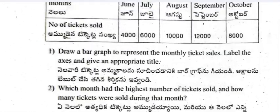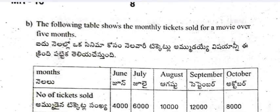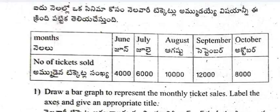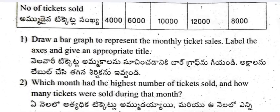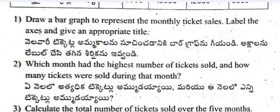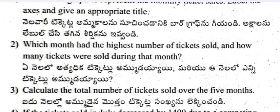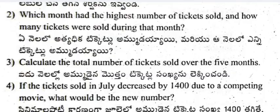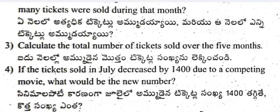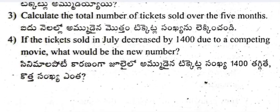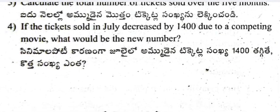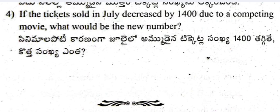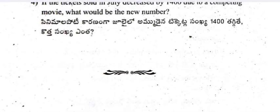Question 21: The following table shows the monthly tickets sold for a movie over five months. Draw a bar graph to represent the monthly ticket sales, label the axes, and give an appropriate title. Which month had the highest number of tickets sold, and how many? Calculate the total number of tickets sold over five months. If tickets sold in July decreased by 1400 due to a competing movie, what would be the new number? This is the complete question paper.